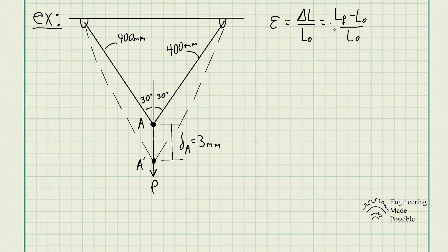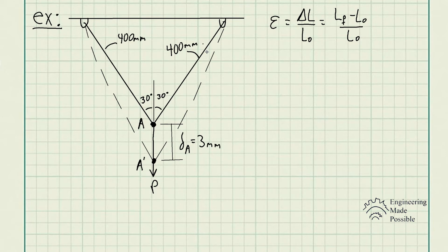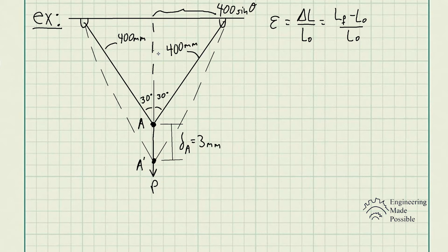Since this is symmetric, one wire deforms the exact same amount as the other, so we only need to solve the strain for one wire. This problem only involves trig. We have the original length of 400 millimeters, and since it's symmetric we can solve for a side length of 400 times sine theta, where theta is 30 degrees. The other side of the triangle is 400 cosine theta.